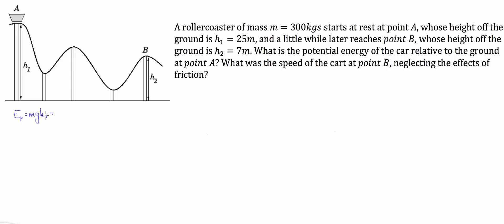Now this is quite simple — just plug in the numbers they give you. The mass is 300 kilos, the acceleration due to gravity is 9.81, and the height at H1 is 25 metres. If we put all of those things into our calculator, we get an answer of 73,575 joules. So that is the answer to the first part: the potential energy of the car relative to the ground at point A.